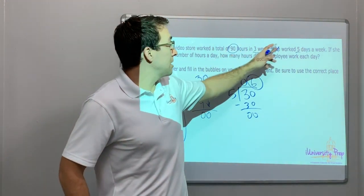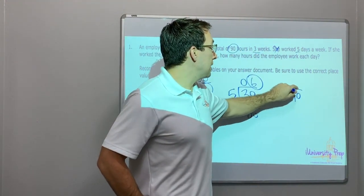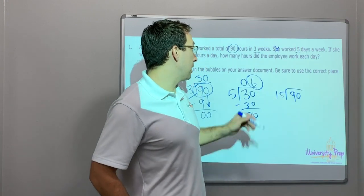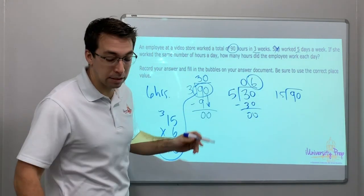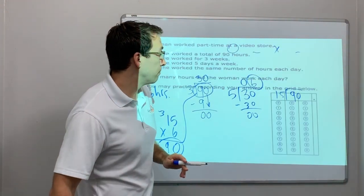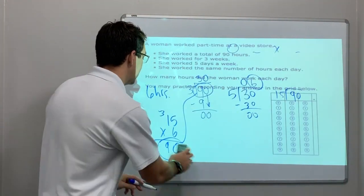We could have originally, three times five, 90 divided by 15, and our answer would have been six. Six times 15 is 90. So the answer, six.